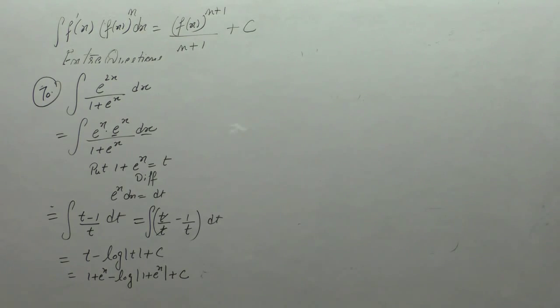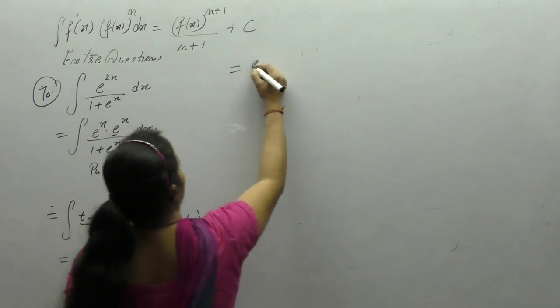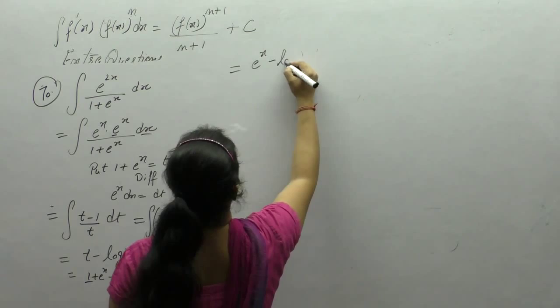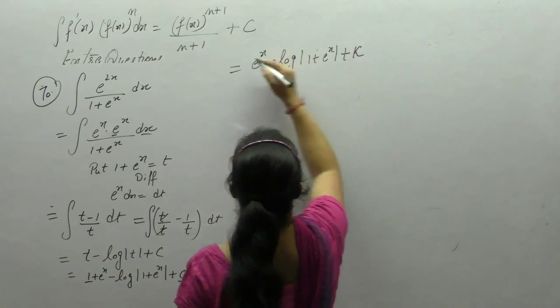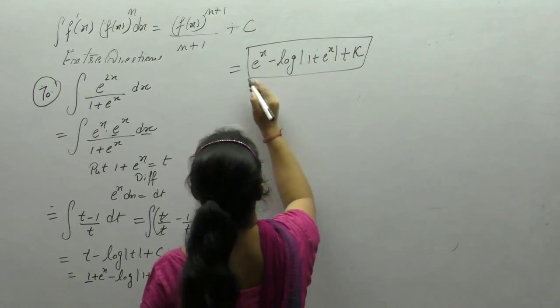1 is constant. 1 and c both are constant. So we can write e to the x minus log of 1 plus e to the x plus another constant k.